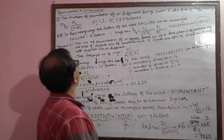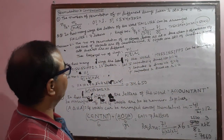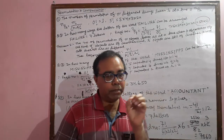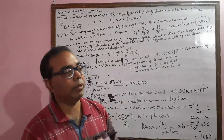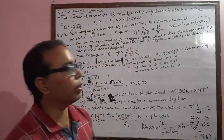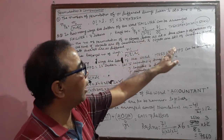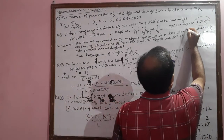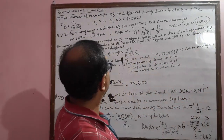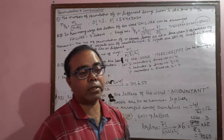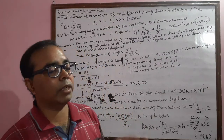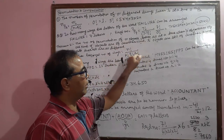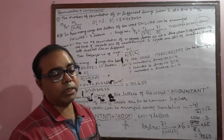Second theorem: the number of permutations of n objects taken all at a time when p objects are of one kind, q objects are of another kind, r objects of yet another kind, and the rest are different. The formula is n factorial divided by p factorial times q factorial times r factorial.